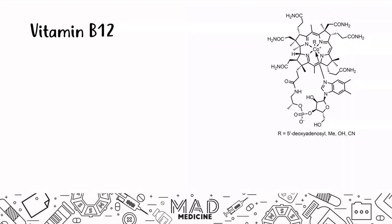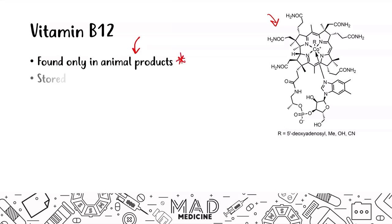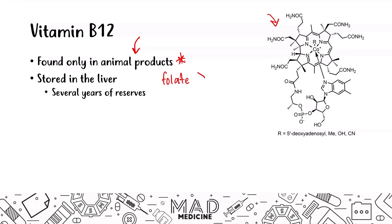When it comes to vitamin B12 — here is a photo of it — vitamin B12 is very important because it's only found in animal byproducts or animal products in general. It is stored in the liver just like a lot of proteins and vitamins, and there are several years of reserves in the liver for vitamin B12. That's very important because vitamin B12 and folate often go hand in hand, but your folate stores are not as extensive as your vitamin B12 stores.